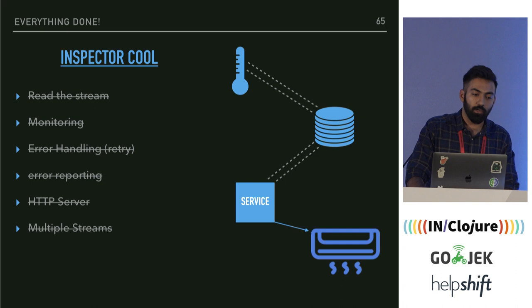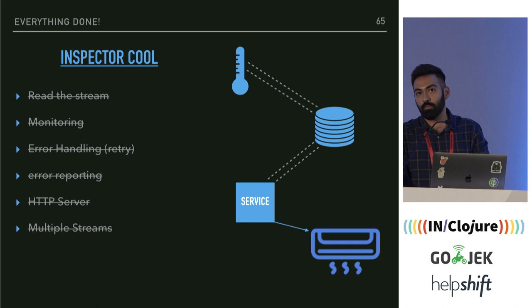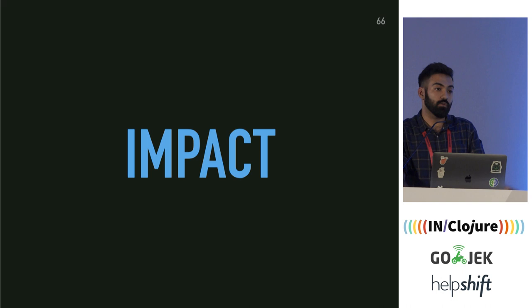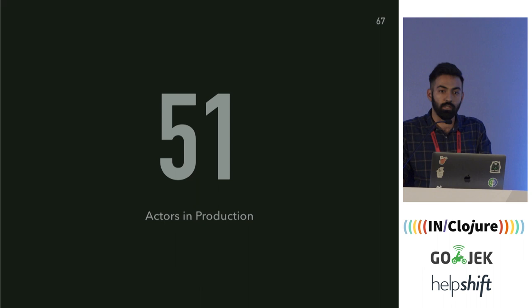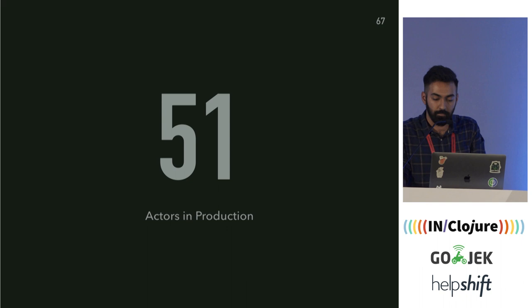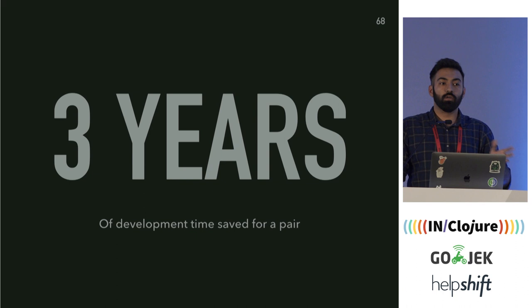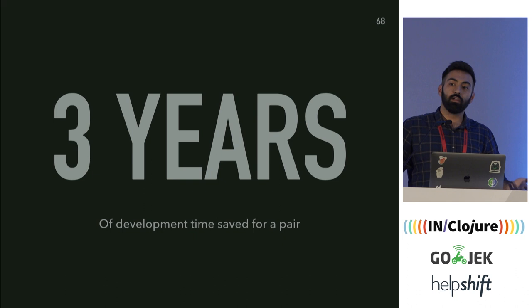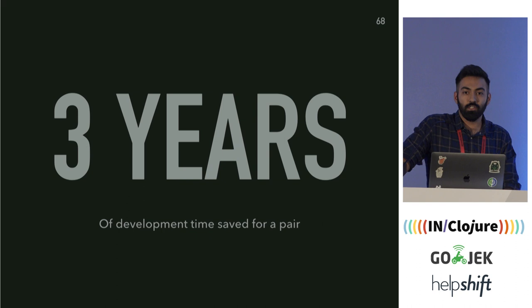This is how Ziggurat evolved over time. We have more than 51 services running in production using Ziggurat. The first service was written around a year ago and has been running fine since then. Stream Notification Service, written using Kafka Streams, took two months to build. A similar service today takes around a week to build. Extrapolated to 50 actors, that's around 150 weeks of effort saved for a pair of programmers — we've saved more than three years of effort in a year using Ziggurat.